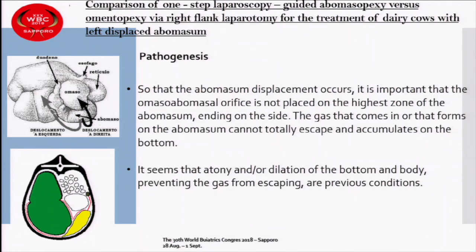About the pathogenesis, we can say that for abomasum displacement to occur, it is important that the abomasal orifice is not placed on the highest zone of the abomasum, ending on the side. The gas that forms in the abomasum cannot totally escape and accumulates at the bottom, causing dilation of the fundus and body, preventing gas from escaping under previous conditions.